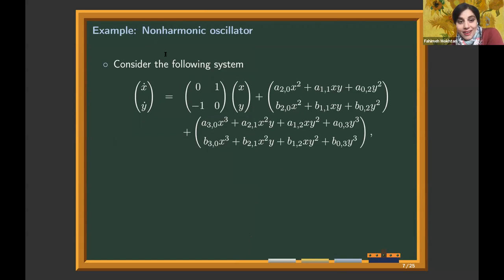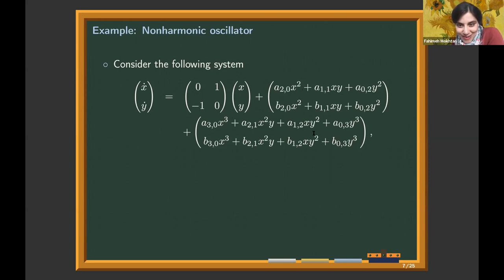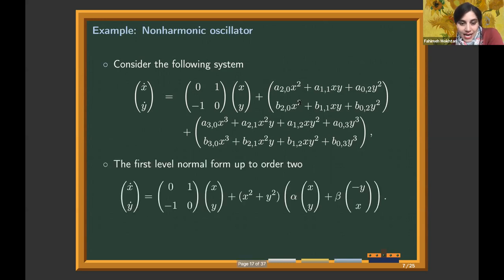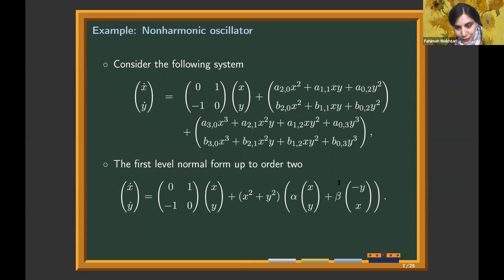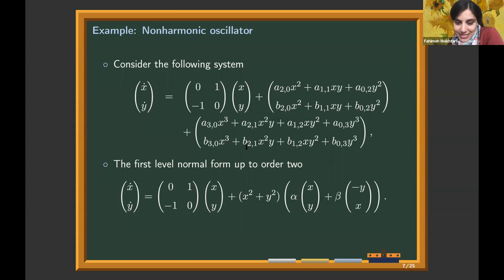For example, take the non-harmonic oscillator: zero and plus-minus i are eigenvalues, so we have a non-hyperbolic fixed point. With all second and third order terms in the nonlinear part, if one computes the normal form, the linear part is preserved and all second order terms are eliminated. In the third order, only a few symmetric terms remain. Using the normal form, we get rid of all terms that don't play a role in the dynamical behavior and obtain a simpler, symmetric form.